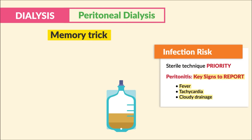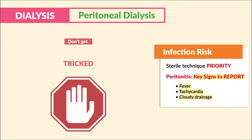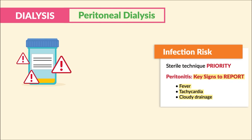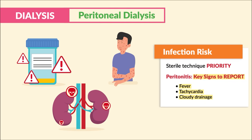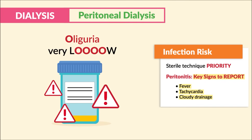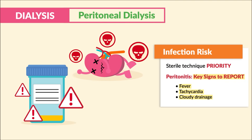The memory trick: no one likes cloudy days and no one likes cloudy drainage. Don't get tricked — priority findings are not oliguria, that low urine output, or pruritus, that itchiness of the skin. These are common and normal findings with almost all renal failure clients. Oliguria — very low urine output — is normal and expected because the kidneys have failed.